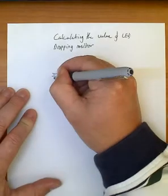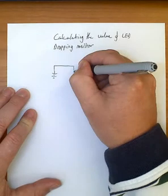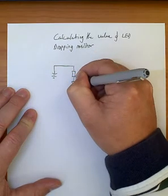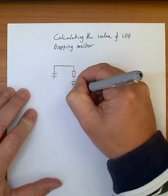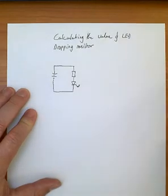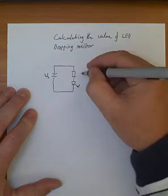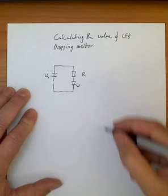I'm going to draw a simple LED circuit here where we have a voltage, which I'm going to say the source voltage or Vs, a resistor, and here's my LED.